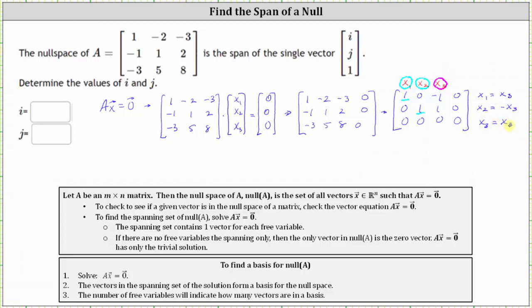Let's go ahead and parameterize this solution by letting x sub three equal t. The solutions to the equation A times vector x equals zero vector are all the vectors x with components x sub one, x sub two, x sub three, where x sub one is equal to t since x sub three is equal to t, x sub two is equal to negative t, and x sub three is equal to t.